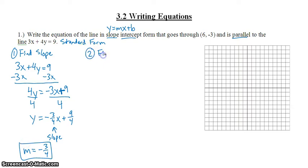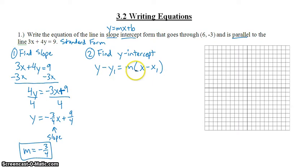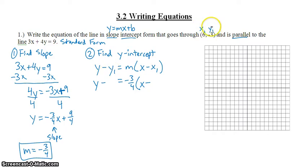Step two: find the y-intercept. I have two methods to find this y-intercept. I'm going to use method one — the point-slope formula. The point-slope formula requires the slope, which we found in step one: negative 3-fourths. And an ordered pair for x₁, y₁. My new line has to go through this point, so this is the point I want to plug in to my point-slope formula.